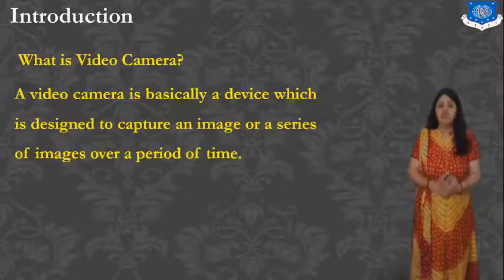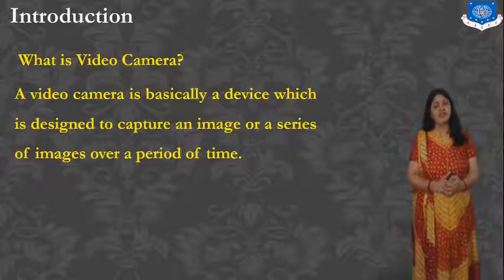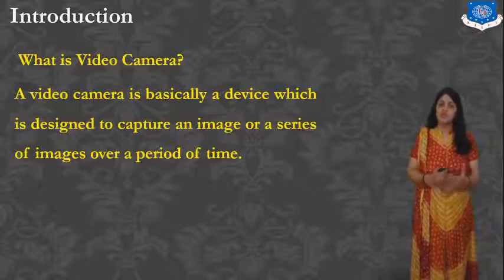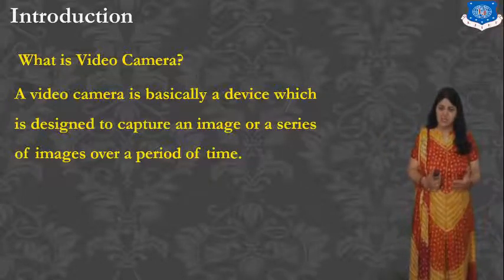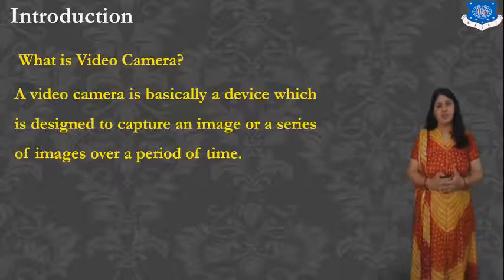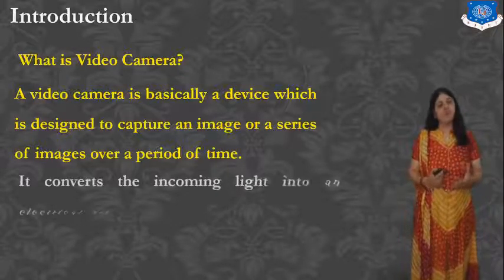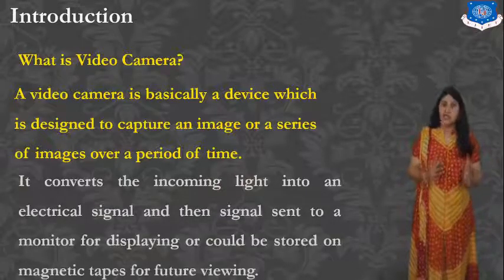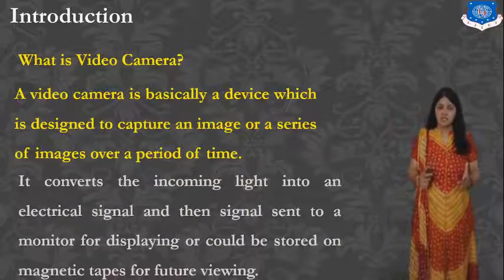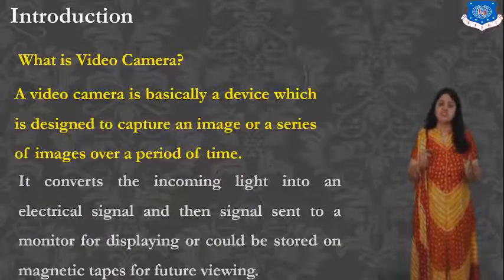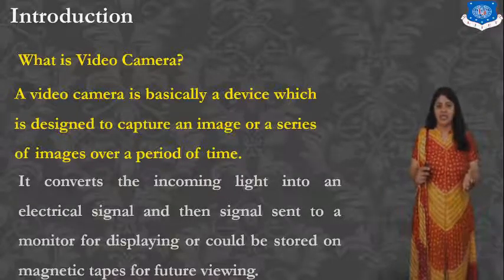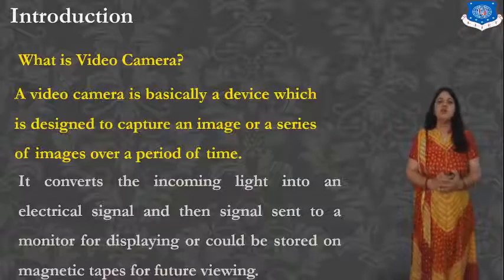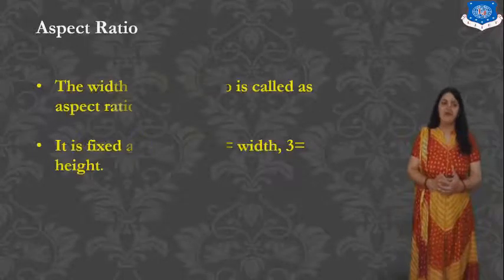To capture the Video Signal, a Video Camera is used. A Video Camera is a device designed to capture an image or a series of images over a period of time. It converts the incoming light into an electrical signal, which is then sent to the monitor for display or stored on a magnetic tape for future viewing.